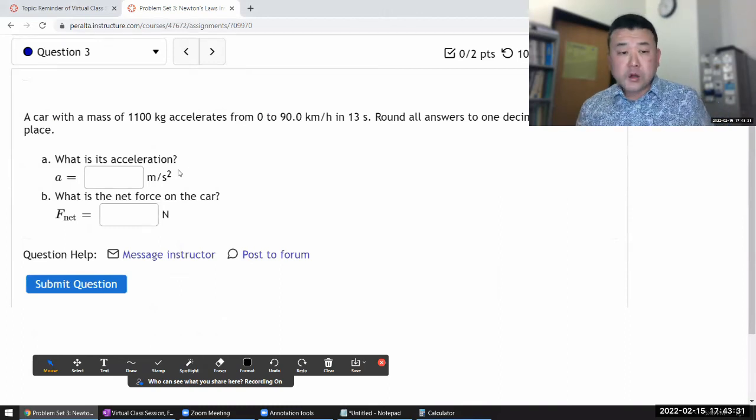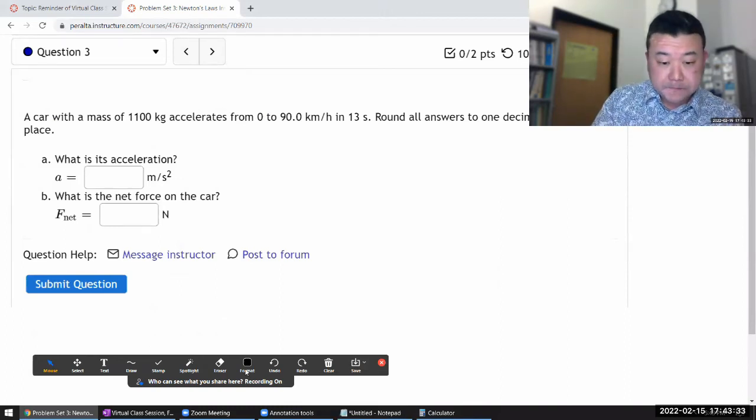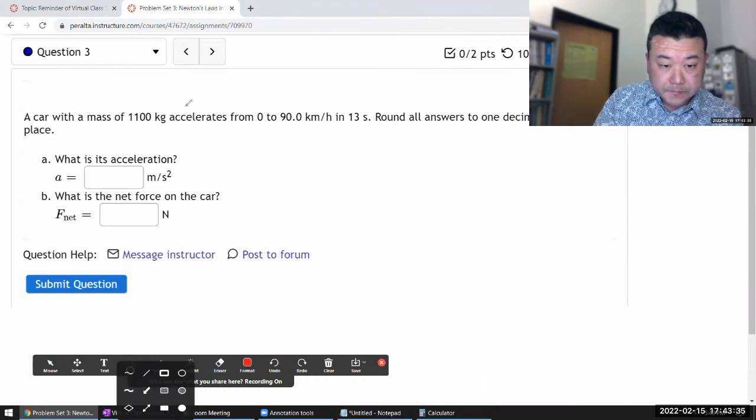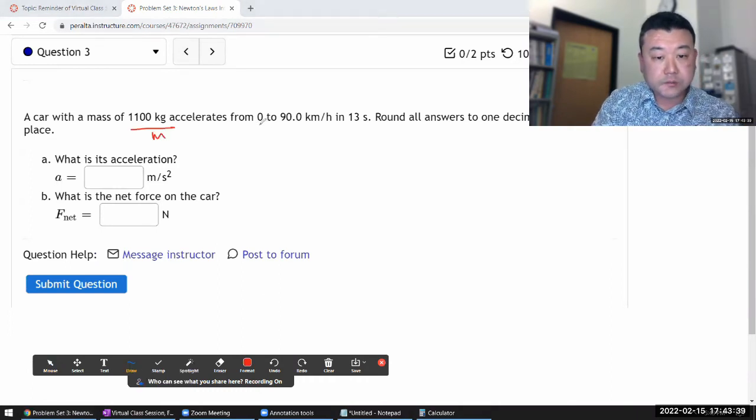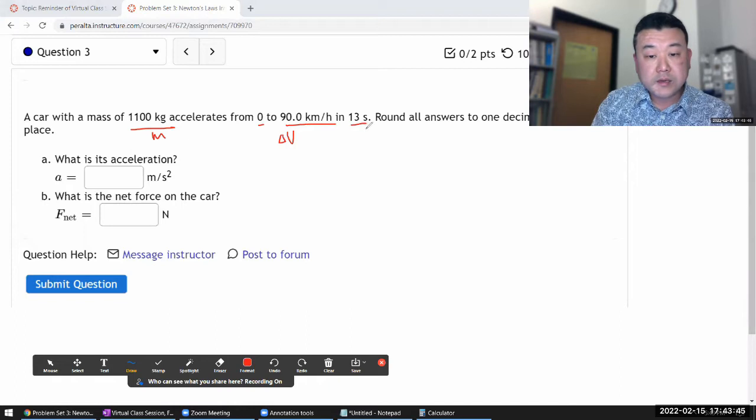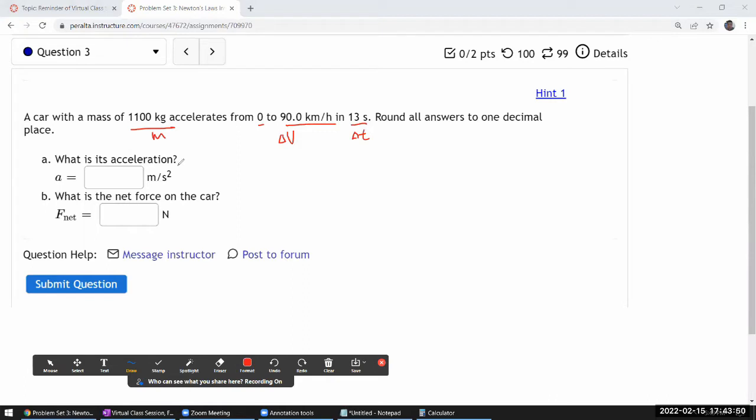It says a car with some mass m accelerates from zero to up, so I guess this is giving me some kind of change in velocity in this amount of time. What is its acceleration?